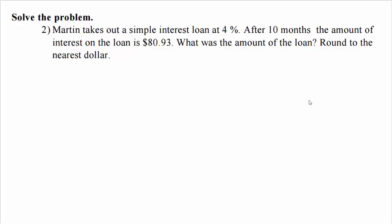The problem states Martin takes out a simple interest loan. When I see simple interest, I know I'll be using the simple interest formula. I'll write it down: I = P·r·t, where I is interest, P is principle, r is rate, and t is time.